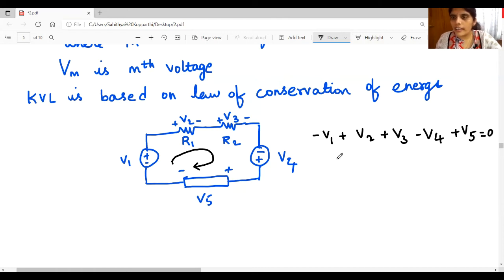So what you will get, you can take V1 and V4 to the other side. You will get V1 plus V4 is equal to V2 plus V3 plus V5.